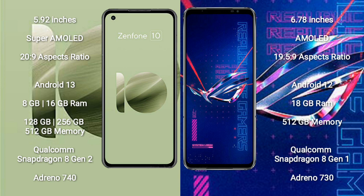The Asus Zenfone 10 runs on the Android 13 operating system, while the Asus ROG Phone 6 Pro runs on Android 12. The Asus Zenfone 10 comes with 8 GB or 16 GB RAM and 128 GB, 256 GB, or 512 GB internal storage.